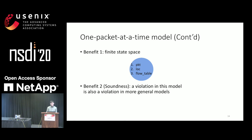First, this model gives us a finite state space for stateful networks. A network state in this model consists of three pieces of information: the packet being processed, the location of the packet, and the internal tables or state maintained by the stateful NFs — in this simple scenario, a flow table. The second benefit is that all behaviors in this simple model correspond to behaviors in other more general models, so any violation found here is a true violation even in those more general models.